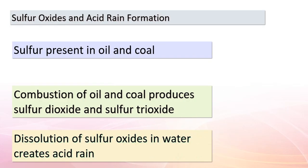Our journey takes an intriguing turn as we delve into the consequences of sulfur presence in common fuels like oil and coal. When these fuels undergo combustion, they generate sulfur dioxide and sulfur trioxide as byproducts. Once released into the atmosphere, these substances have the ability to dissolve in water, leading to the creation of acid rain — a major pollutant in various regions around the world. It's a vivid example of how chemical reactions in industrial processes can directly influence our environment.